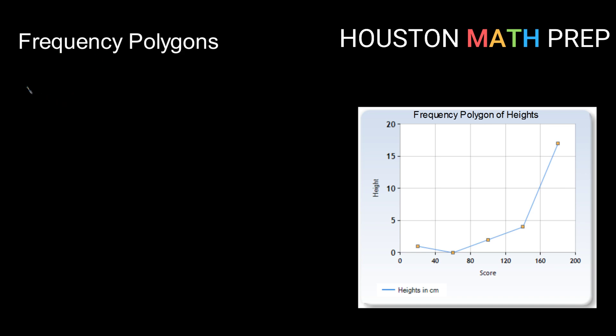So this is a line graph of frequencies. If you've watched our videos about histograms, these are actually going to be very similar. The only difference is that instead of drawing a bar in each space that represents the height or the frequency, we instead draw a dot right in the middle and then we connect those dots so we can see the change from one class to the next.